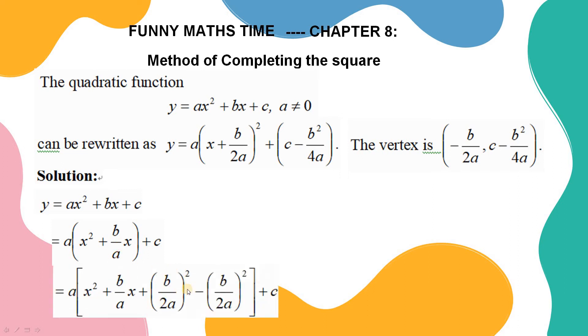b over 2a all square plus b over 2a squared minus b over 2a squared. Yes, very good. In the next slide, we repeat this step and continue that proof.